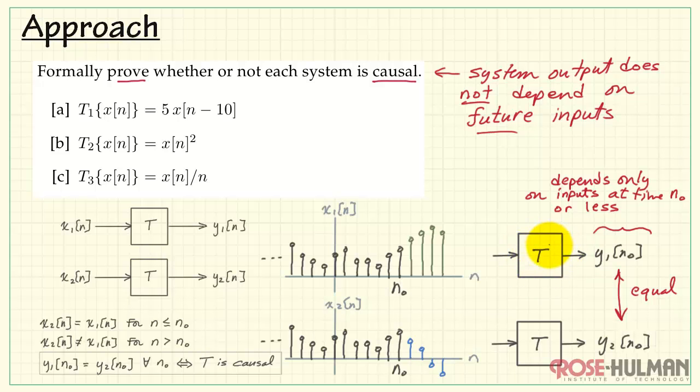However, suppose the system does, in fact, make use of this region of x1 and x2 where they are different. Then, y1 and y2 at this time n0 would not be equal. That means that they are making forward references to areas of x1 and x2 that were different, and that would tell us the system is not causal.